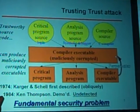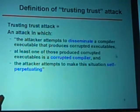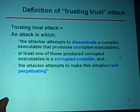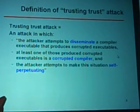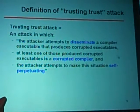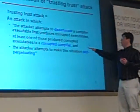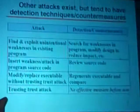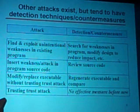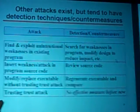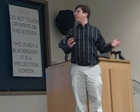This is a fundamental security problem. The trusting-trust attack is one in which the attacker attempts to disseminate a compiler executable that produces a corrupted executable, where at least one of those corrupted executables is a corrupted compiler, and the attacker tries to make this self-propagating. There are lots of other attacks, and I don't mean to say those other attacks are unimportant — but we generally have countermeasures for those.